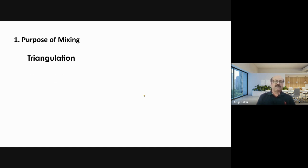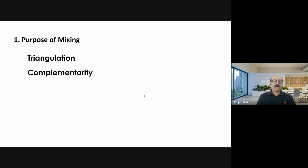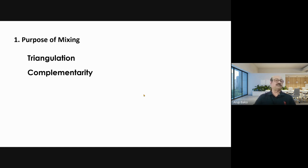The first purpose is triangulation — it seeks convergence and correspondence of results from different methods to give a better understanding of the phenomenon under study. The second is complementarity — it offers elaboration, clarity, explanation, and illustration. It clarifies results from one kind of study, or explains results of one study based on results of another. If complementarity is what a researcher is looking for, mixed method research is the better option.